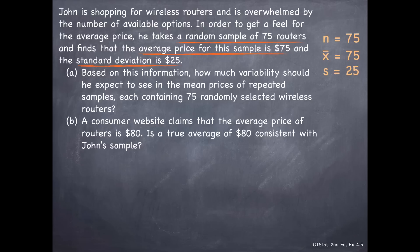So we're looking at variability in mean prices, each containing 75 randomly selected wireless routers. Since we're asked about variability in mean prices, we should immediately think about the standard error, which we know can be calculated as σ, the population standard deviation, divided by square root of n.